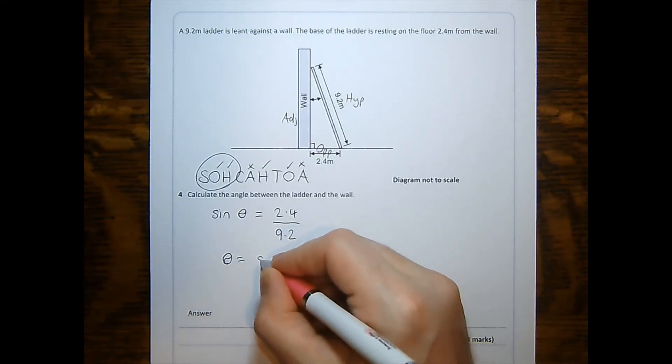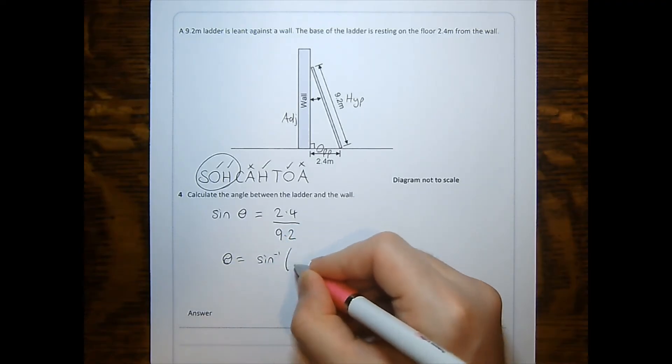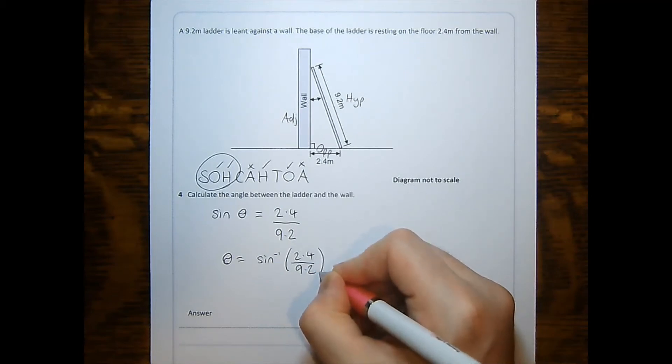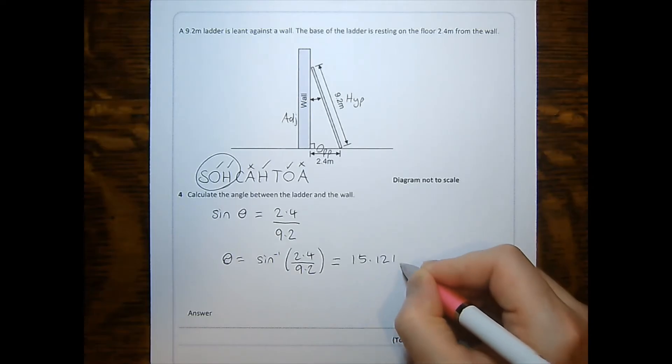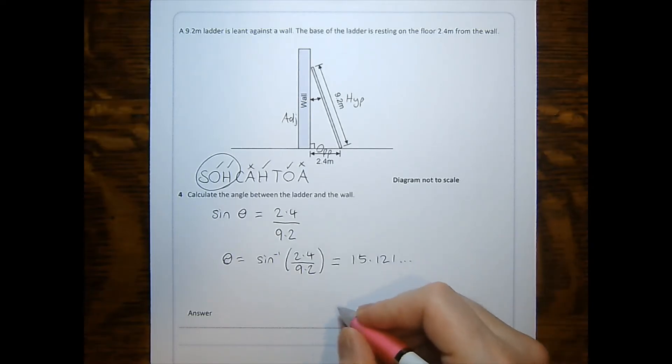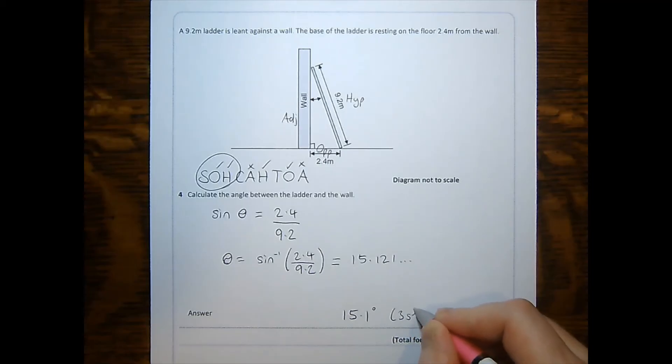Rearranging, the angle is equal to the inverse sine of 2.4 over 9.2. With my calculator, I get 15.121 etc, which I round to 15.1 degrees for three significant figures.